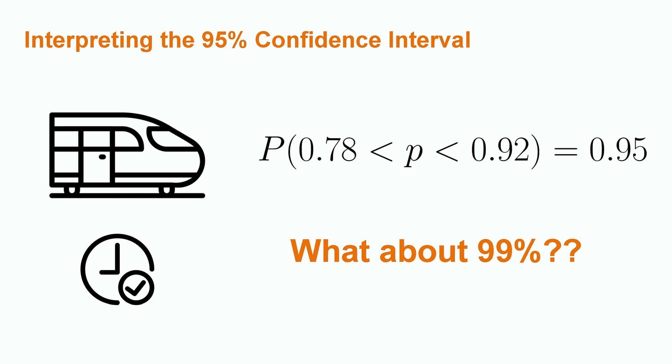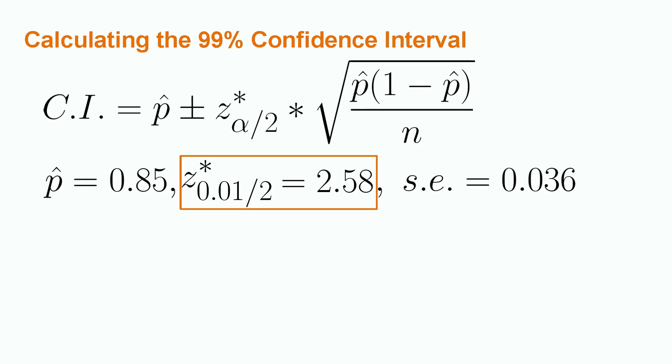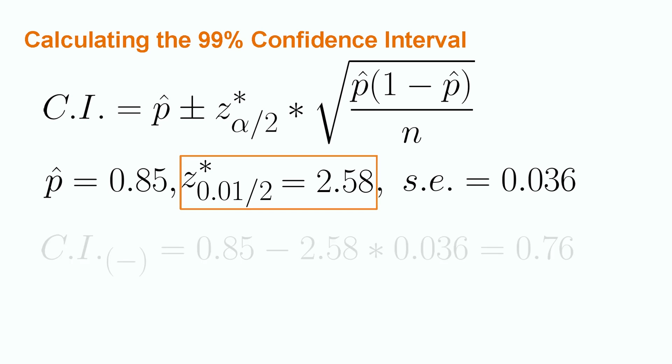But what about the 99% confidence rating? This may be helpful to evaluate the best or worst-case scenarios for the operator. We can follow the same process to construct the confidence interval, but just change our inputs to include the 99% confidence level z-score or 1% significance level z-score, which is equal to 2.58. Pause the video for a moment to see if you can construct the upper and lower bounds of this confidence interval on your own. If you can, what do you notice about the results? Is the confidence interval bigger or smaller? Hopefully you've taken a moment to perform that calculation. Let's start with the lower bound, which is equal to 0.85 minus 2.58 times 0.036, yielding 0.76. The upper bound is then equal to 0.85 plus 2.58 times 0.036, giving us 0.94.